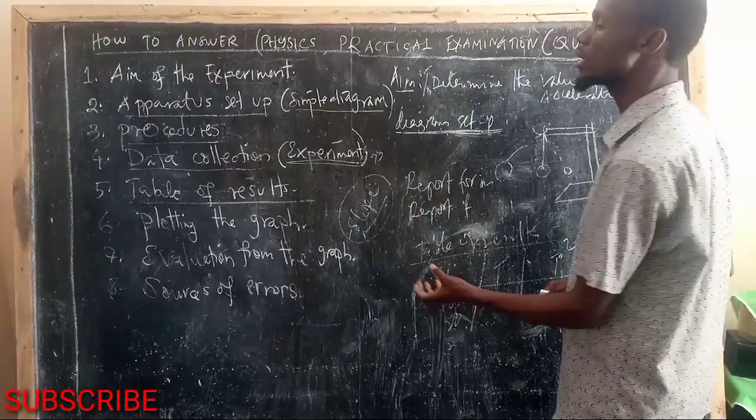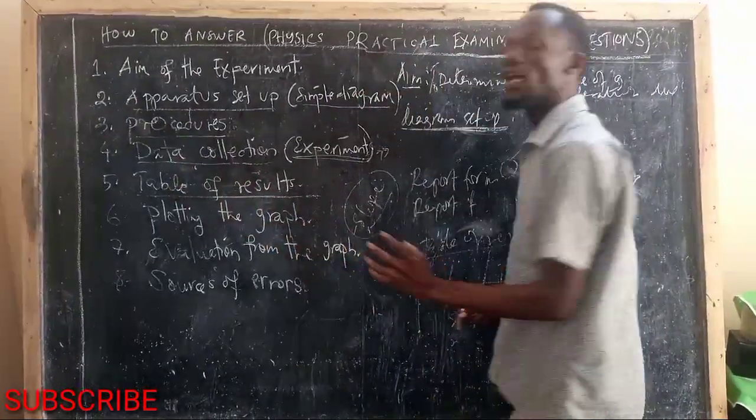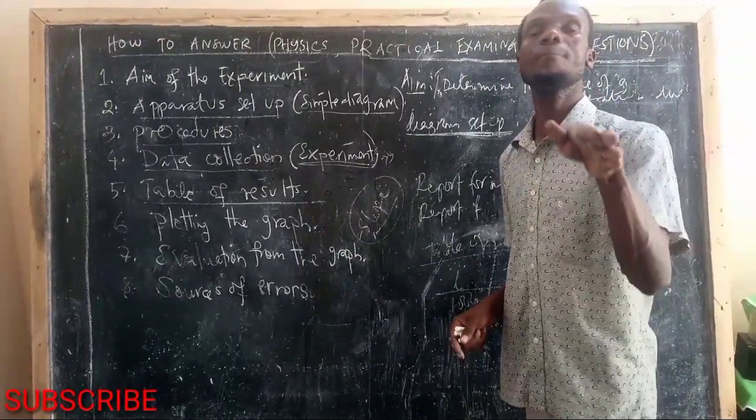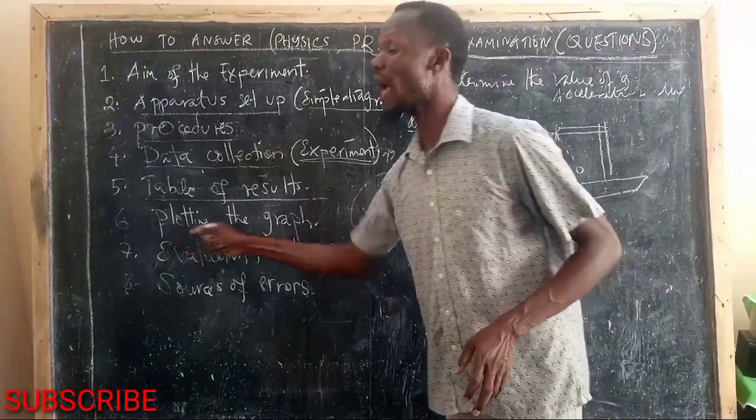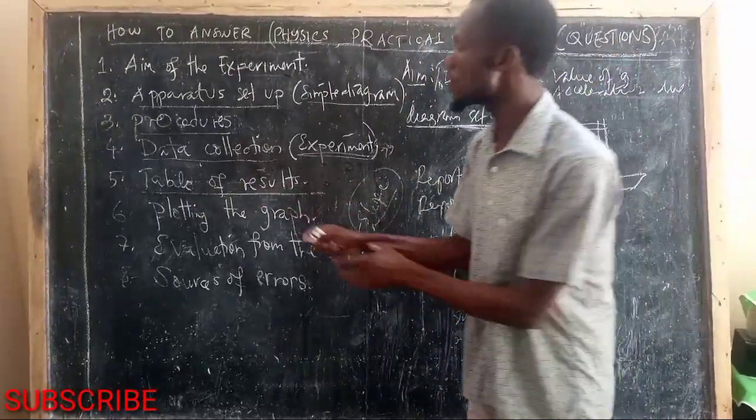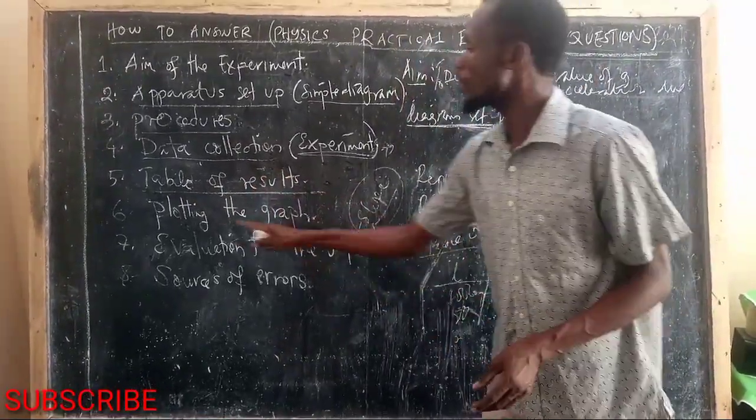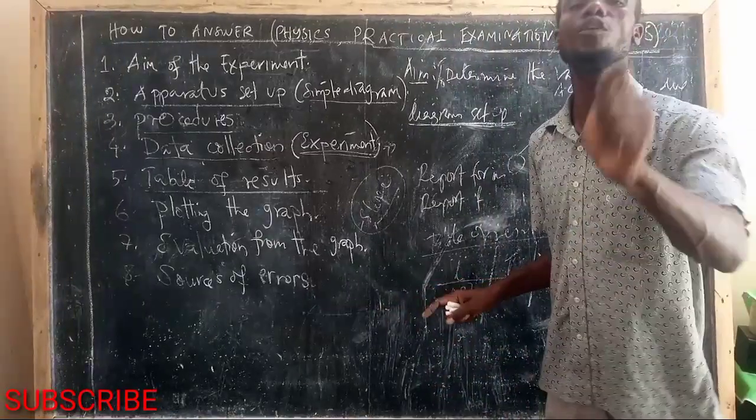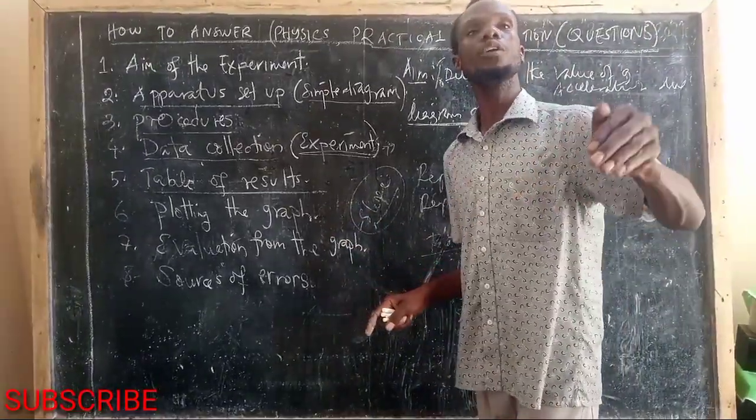And that is called table of results. From the table of results, you are definitely looking for something. You have to plot the graph. After you have got table of results, you have to represent those results on the graph. That is called plotting the graph. Plotting the graph is very important.